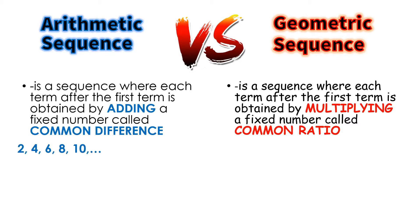So for example, 2, 4, 6, 8, 10, and so on. Since you are adding 2 on the terms of this sequence, then you have a common difference which is 2, then this is an example of arithmetic sequence.